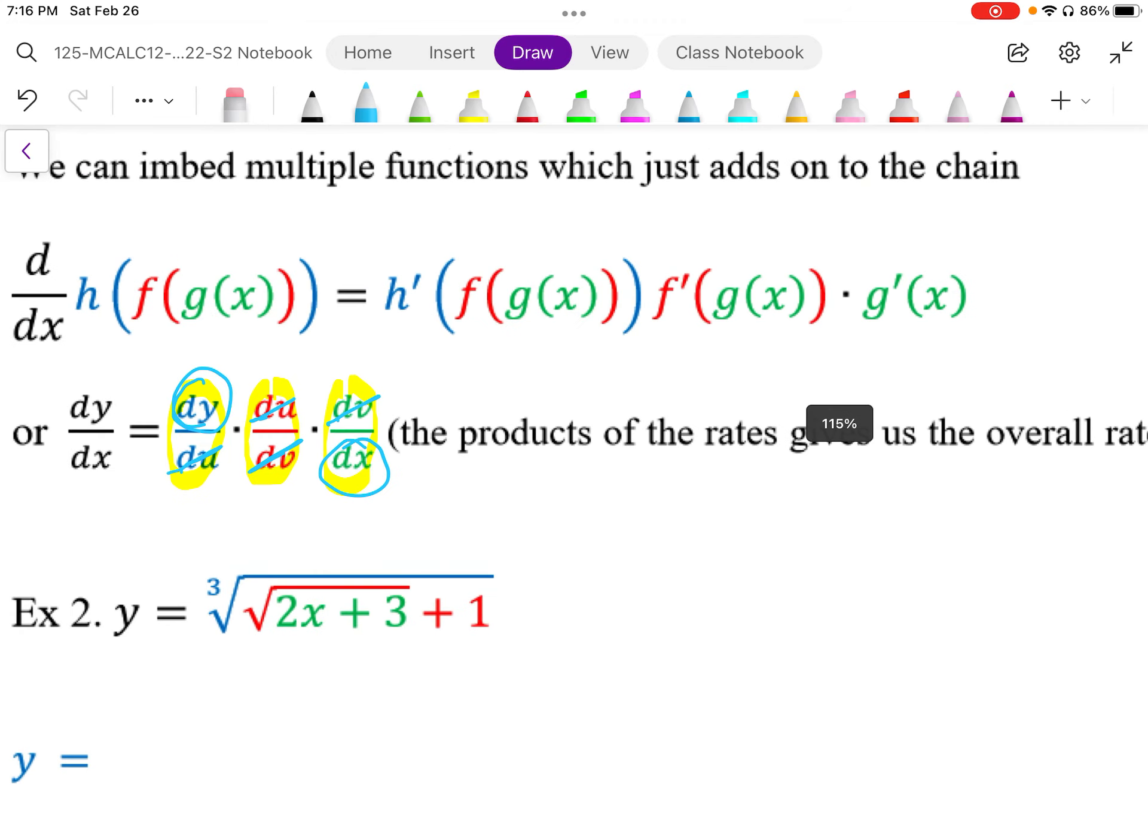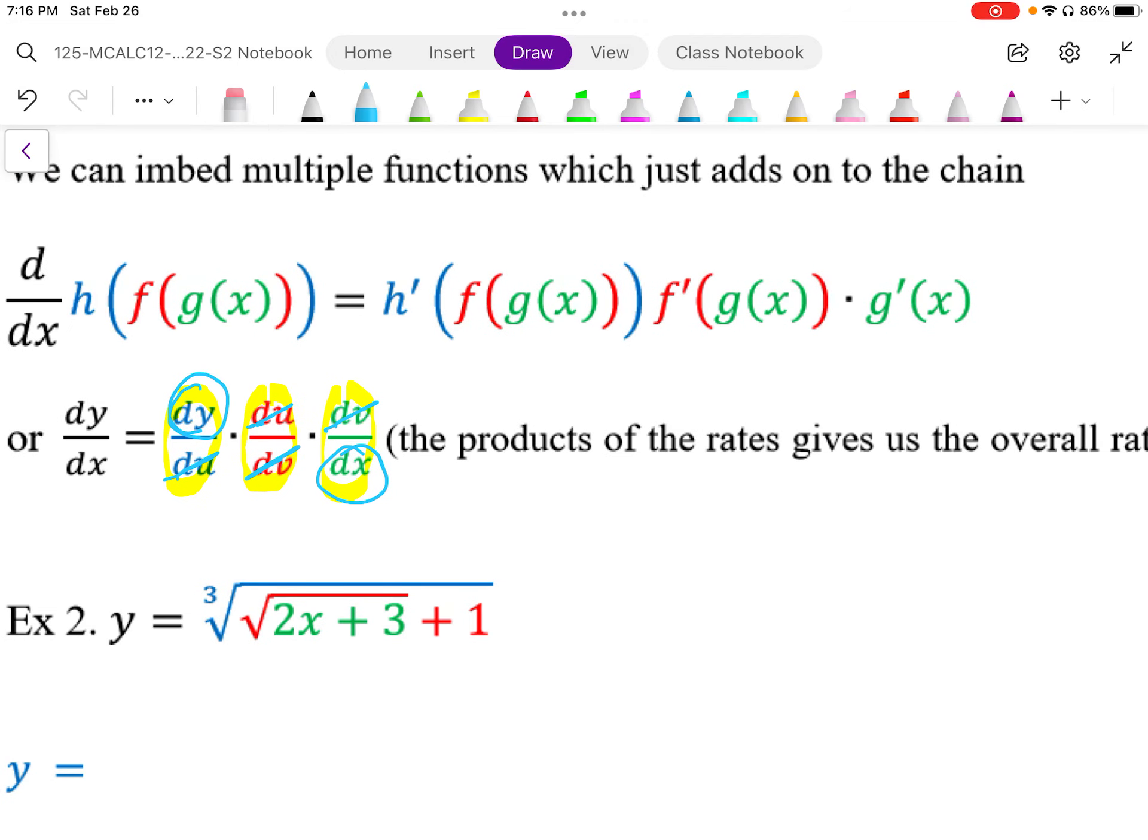So when we have embedded functions, we multiply the rates because the overall rate is dependent on the partial rates of each embedded function.